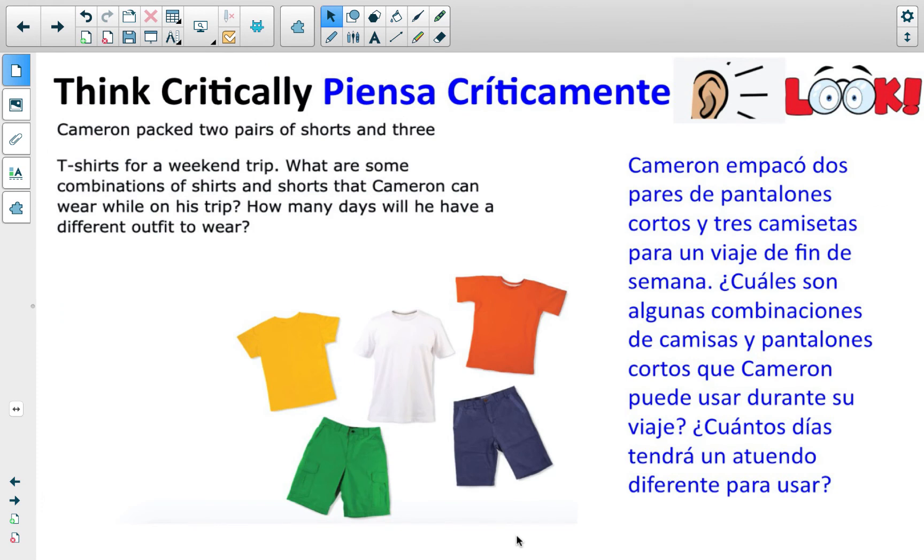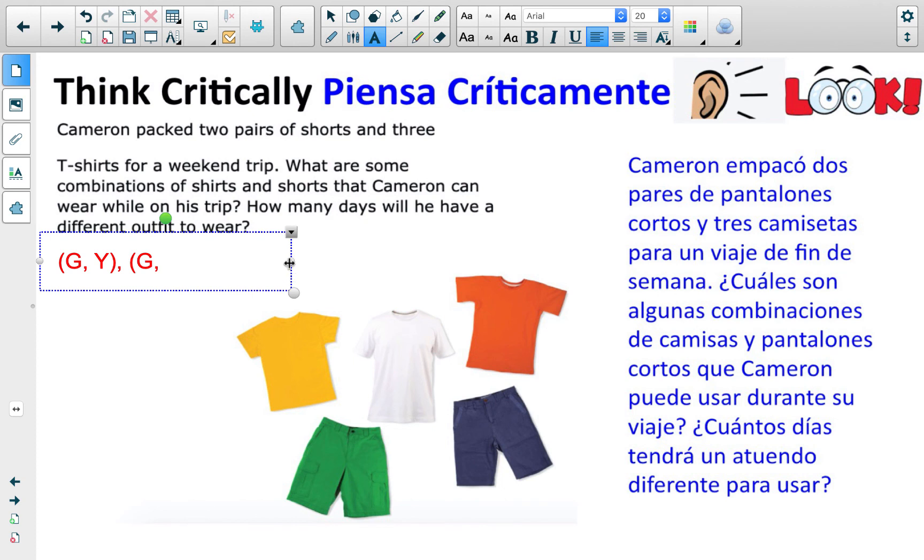Back to this example here. You should be able to answer this now. So this is a good check-in. How many combinations, how many days will he have with a different outfit? Well, he can wear his green shorts and yellow shirt. He could also wear his green shorts with a white shirt, and then he can wear his green shorts with the orange. And that takes care of all the pants, shirts combination with the green. Now, if we move on, I'm going to call that blue. We got blue and yellow, blue and white, and then blue and orange. So to address this question, what are some combinations of shirts and shorts? That's this sample space. It can be green, yellow, green, white, or green, orange, or blue, yellow, blue, white, blue, orange.